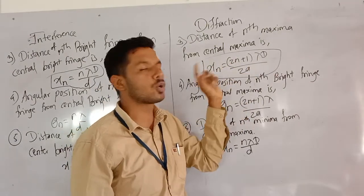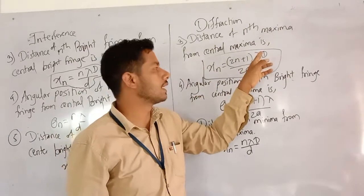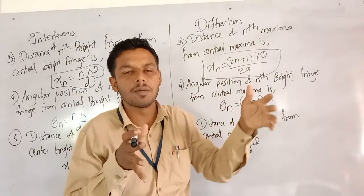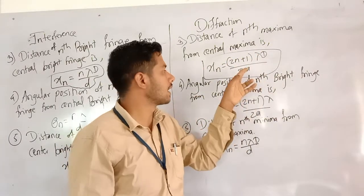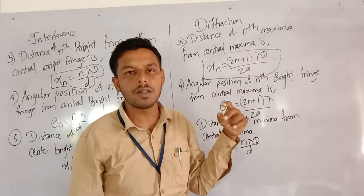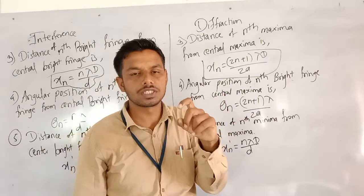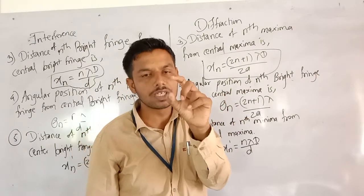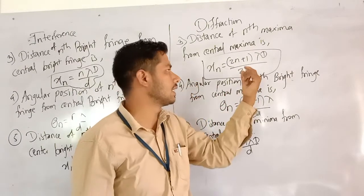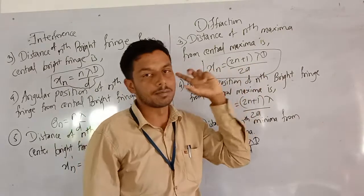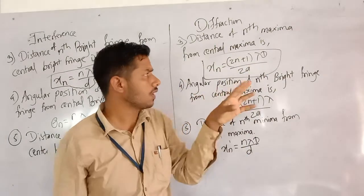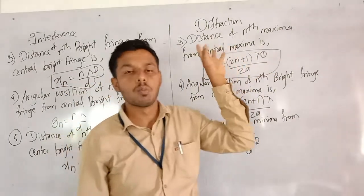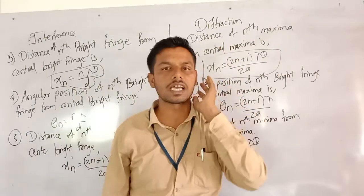For diffraction, the distance of the nth dark fringe from the central maximum is xn' = nλD/a, where λ is the wavelength, D is the distance between the slit and screen, and a is the width of the single slit.